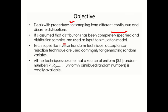The objective of this lecture is to design a procedure for generating random variates using different continuous and discrete distributions. Here we assume that the distributions have been completely specified and the distribution samples are used as input to the simulation models. Once after generating random variates, those random variates are used as input to the simulation models.